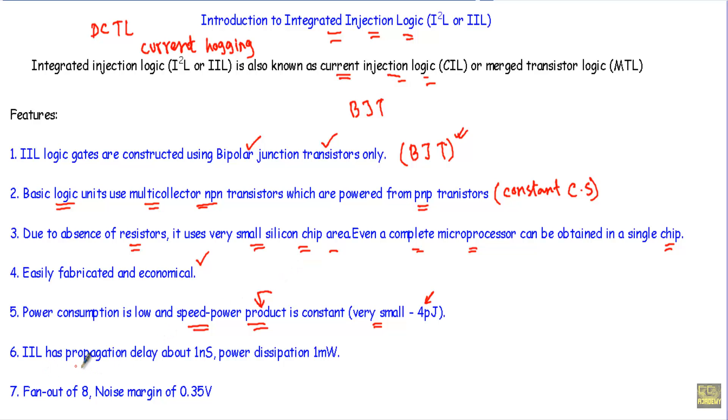Integrated Injection Logic has propagation delay around 1 nanosecond, which is very small. And the power dissipation, that means our logic gate will draw only 1 milliwatt of power to perform its logical operation, which is very small.